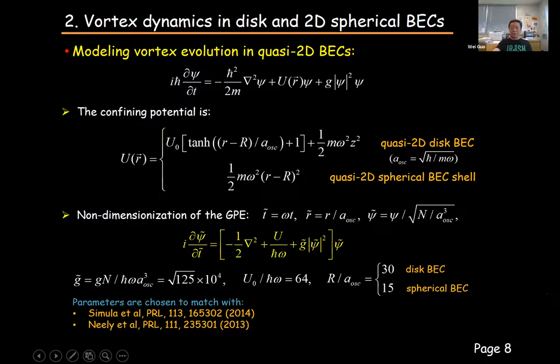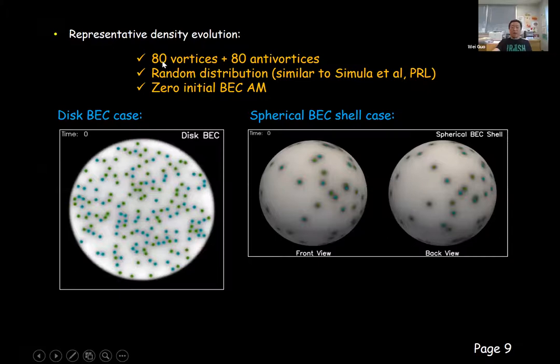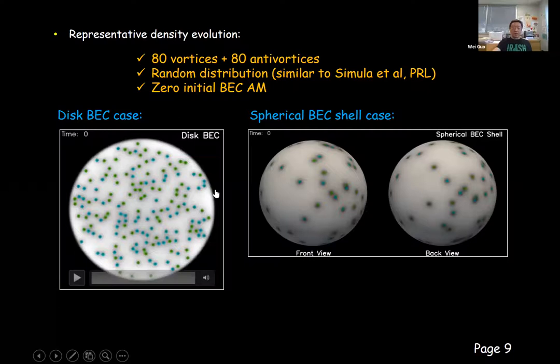For the initial state, we imprint the velocity field of 80 vortices and 80 anti-vortices in the BEC, with those vortices randomly distributed. We also made sure that in the initial state, the angular momentum of the BEC is nearly zero. We then evolved the GPE and studied how the vortices evolved.